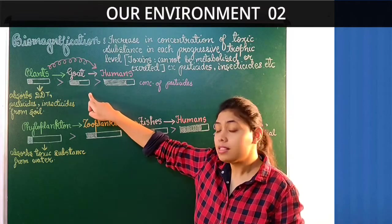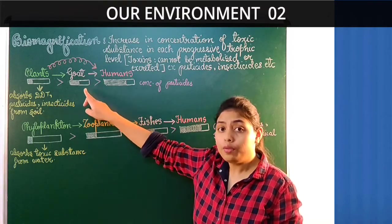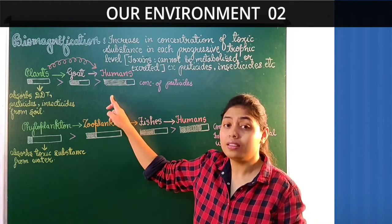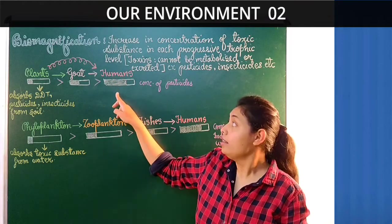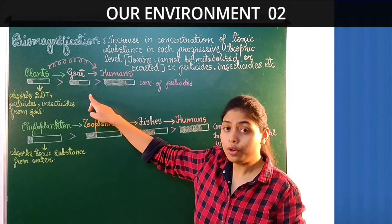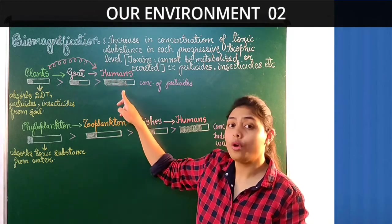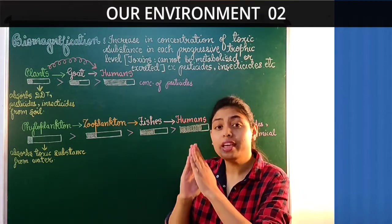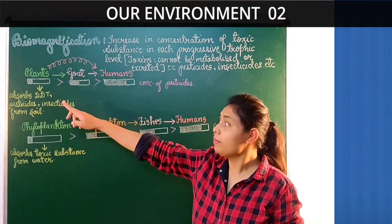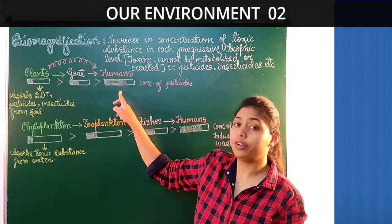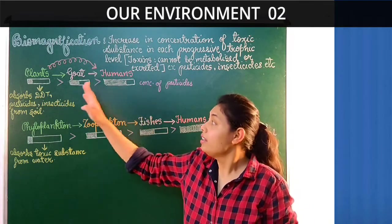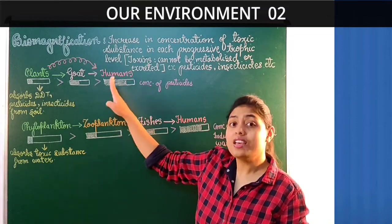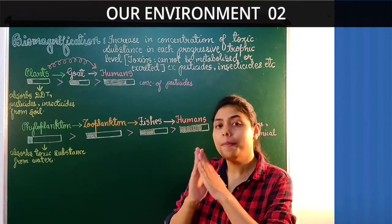The chemicals present in the goat's body will enter the body of carnivore animals present in the third trophic level. Humans eat the goat as food, so the chemical present in the goat will enter into the body of humans. The concentration of the chemical has also increased at the second and third trophic levels. We can see that these toxic substances are increasing in the body of organisms present in each successive trophic level — this is called biomagnification.